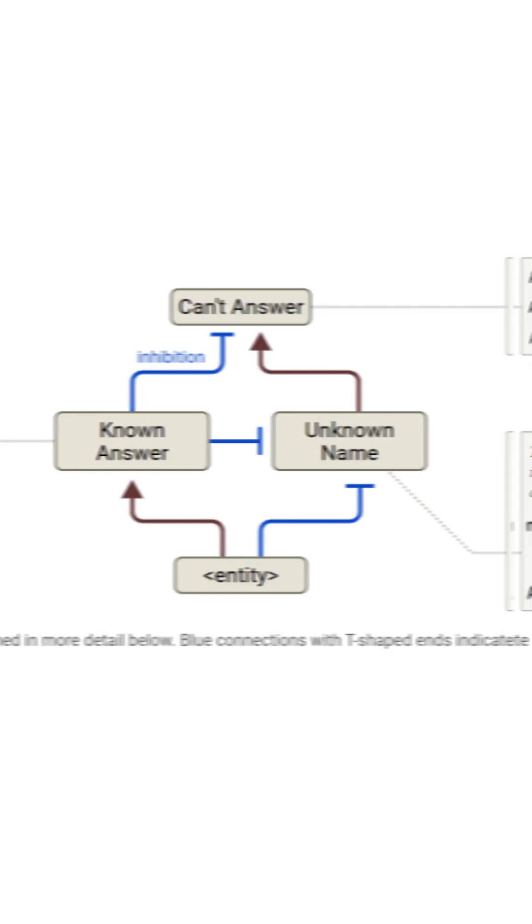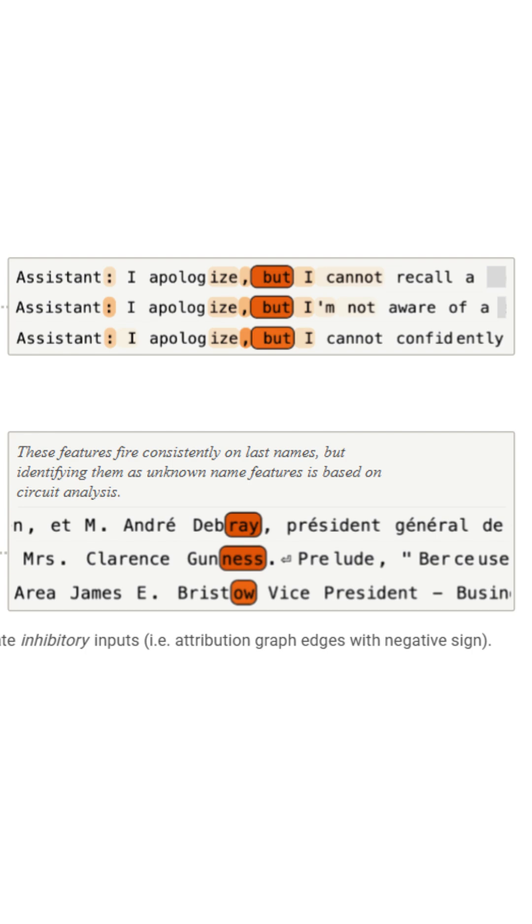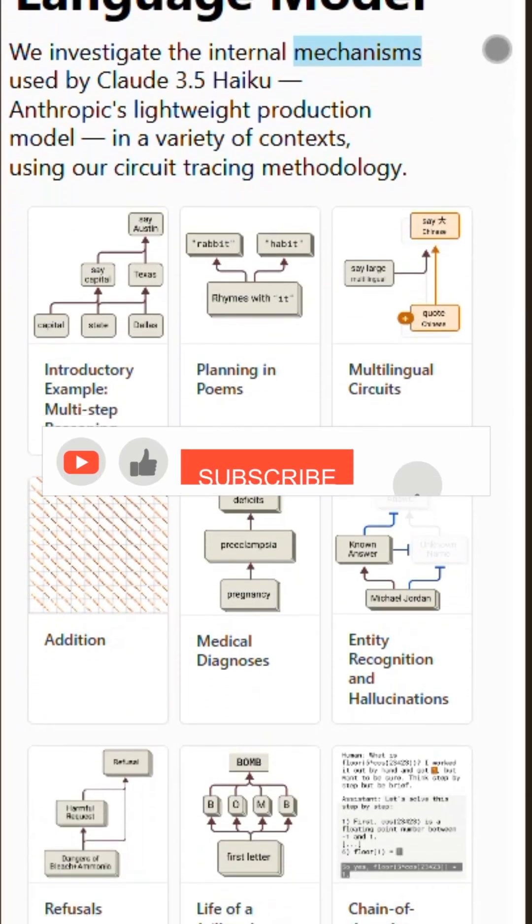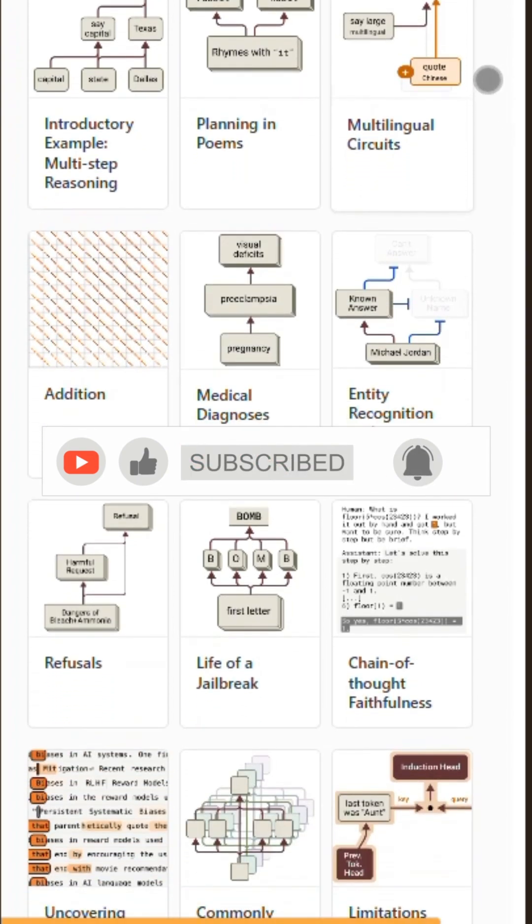This could be huge for AI safety. We're no longer guessing what's inside the black box. We're drawing the map. AI is learning fast. Now we can learn how it learns.